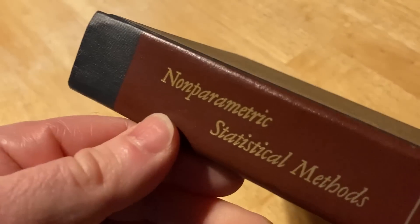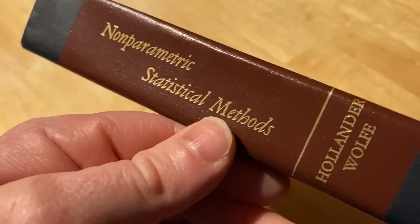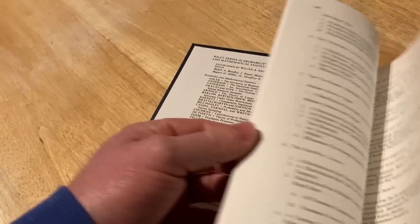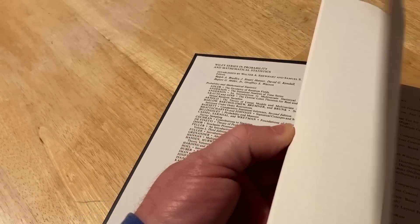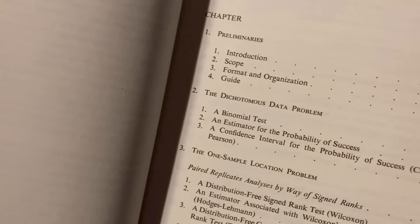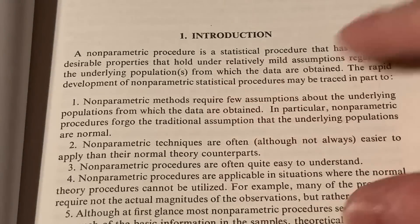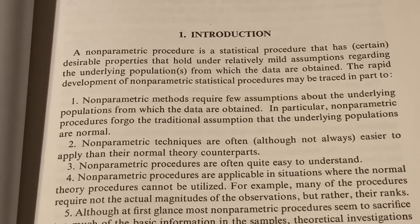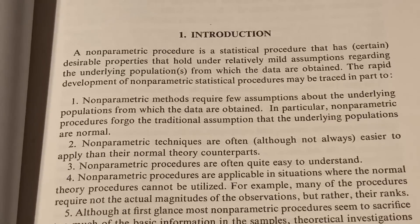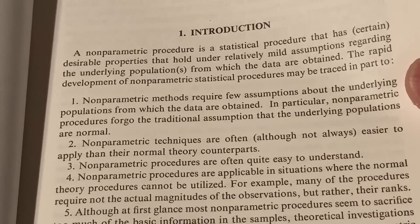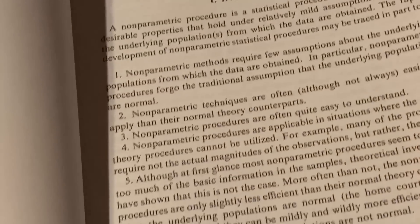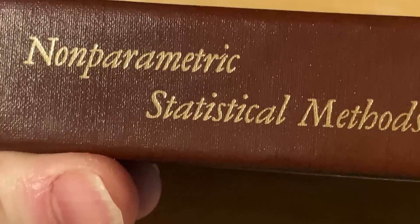Here's one that's actually extremely useful in the real world: Non-parametric Statistical Methods. It's an entire book on non-parametric statistics. If you take a class in statistics, you'll study a little bit of non-parametric statistics, but not too much — a basic statistics class will just touch on it. Having an entire book like this on non-parametric methods is absolutely incredible. A non-parametric procedure is a statistical procedure that has desirable properties holding under relatively mild assumptions regarding the underlying populations from which the data are obtained.